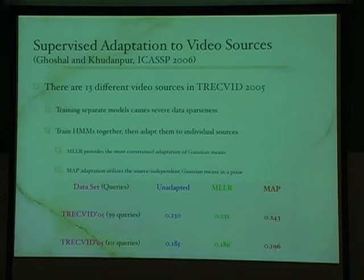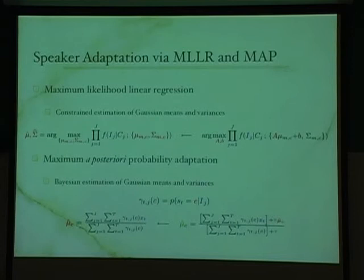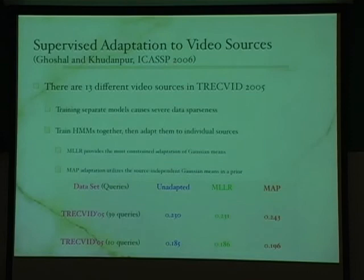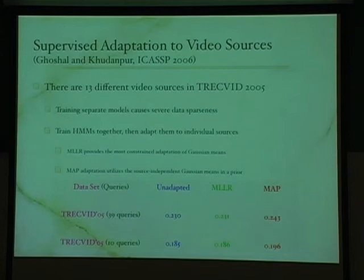An audience member asked: on the previous slide, were both means and variances being updated? In the results shown, only means were adapted — we haven't had time to adapt variances as well. Overall, MAP adaptation gives significant gains, confirmed both by a two-tailed T-test and qualitative inspection of retrieved images.